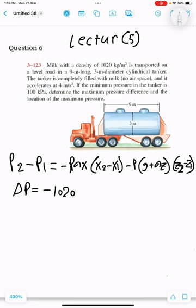1020 minus ax, the acceleration. It's going by minus, so multiply minus 4, multiply the x2.